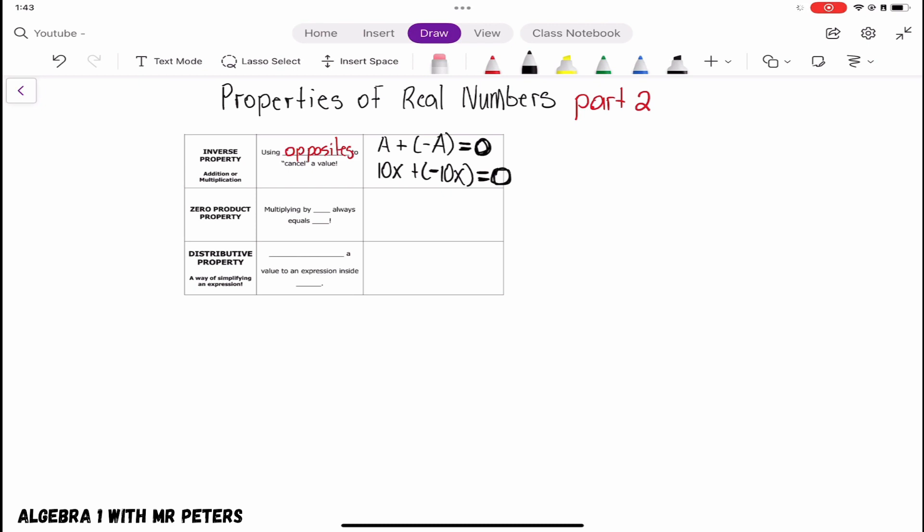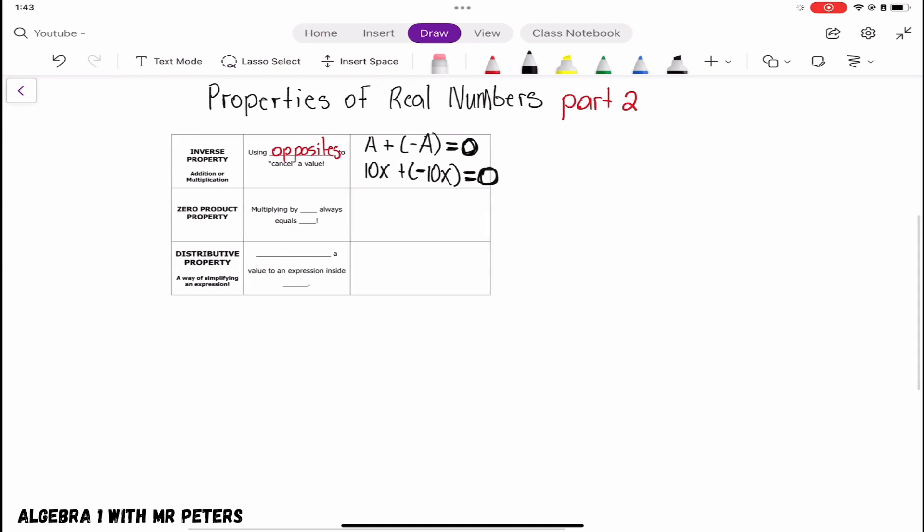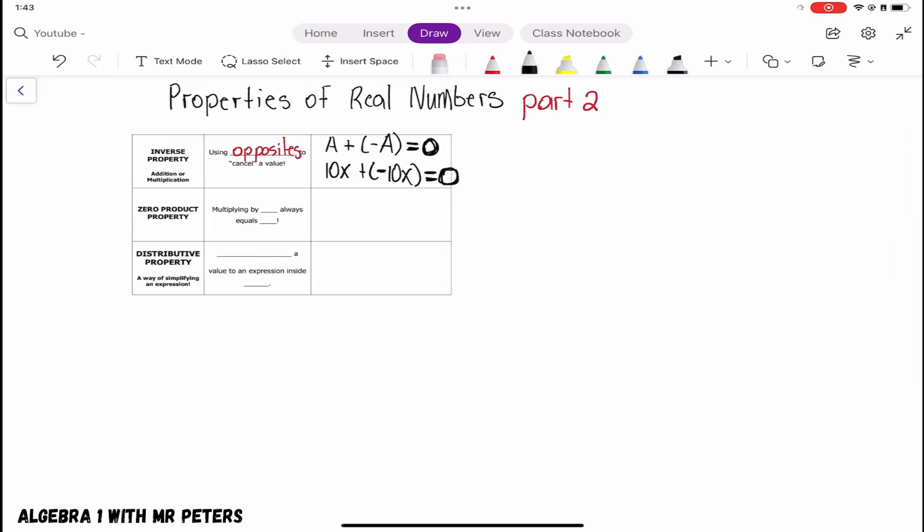So let's say we had an example: A divided by B multiplied by B divided by A. What we should know is that this is just going to simplify to one.